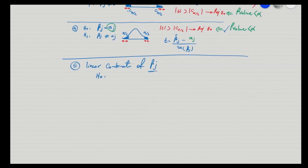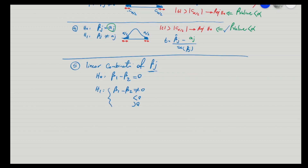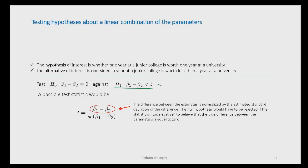This is a linear combination of the β's. The null is β1 minus β2 equals zero, and the alternative can be various forms: not equal to zero, less than zero, or greater than zero. In this example, we want to test if β1 minus β2 is less than zero — that is, β_junior_college minus β_university_college is less than zero — which implies that the effect of university college is greater than the effect of junior college on wage.